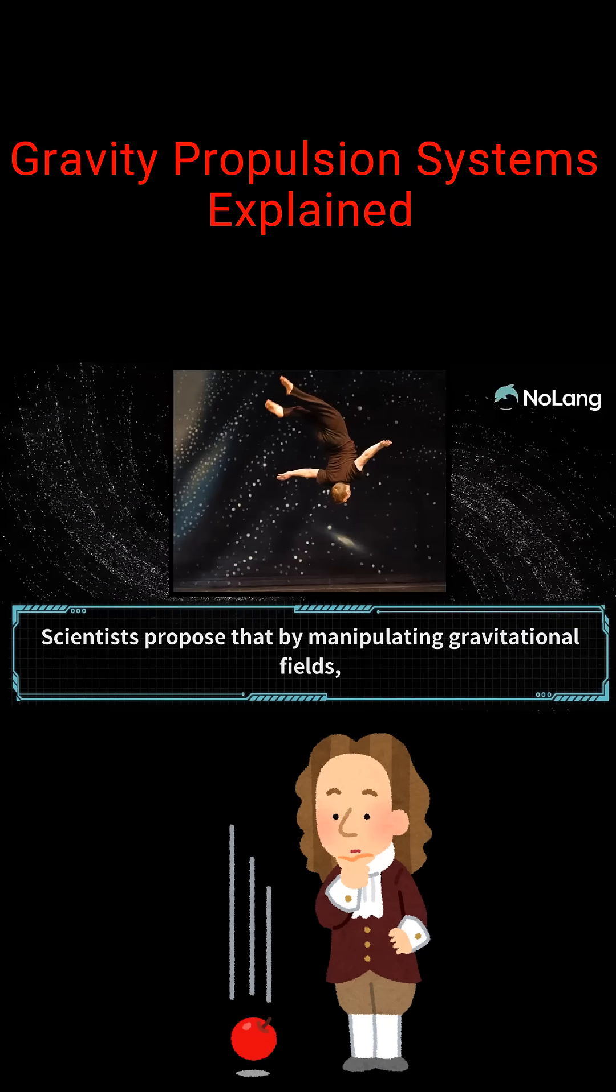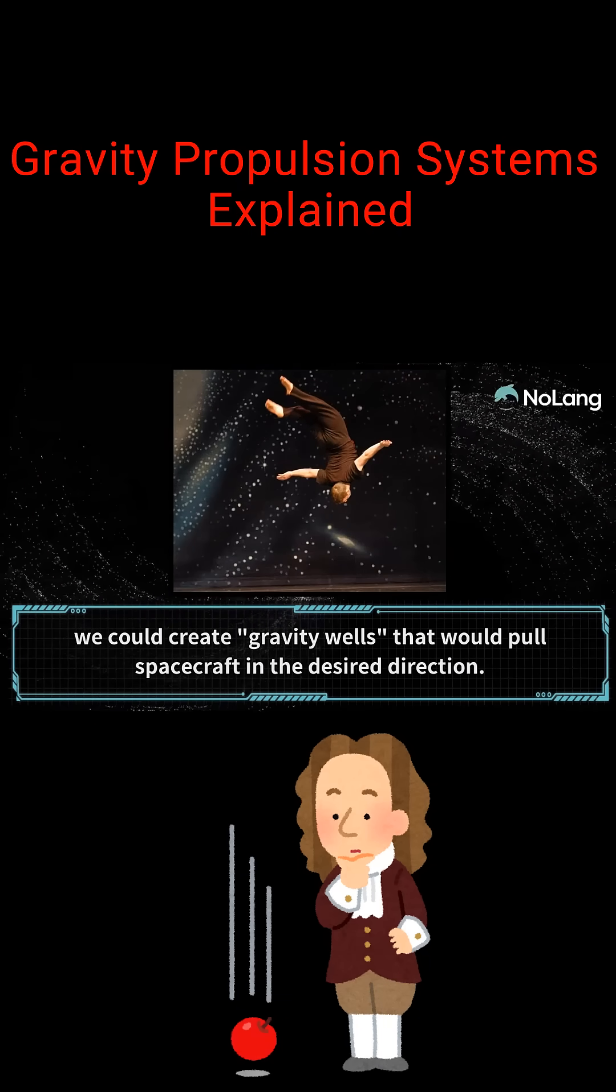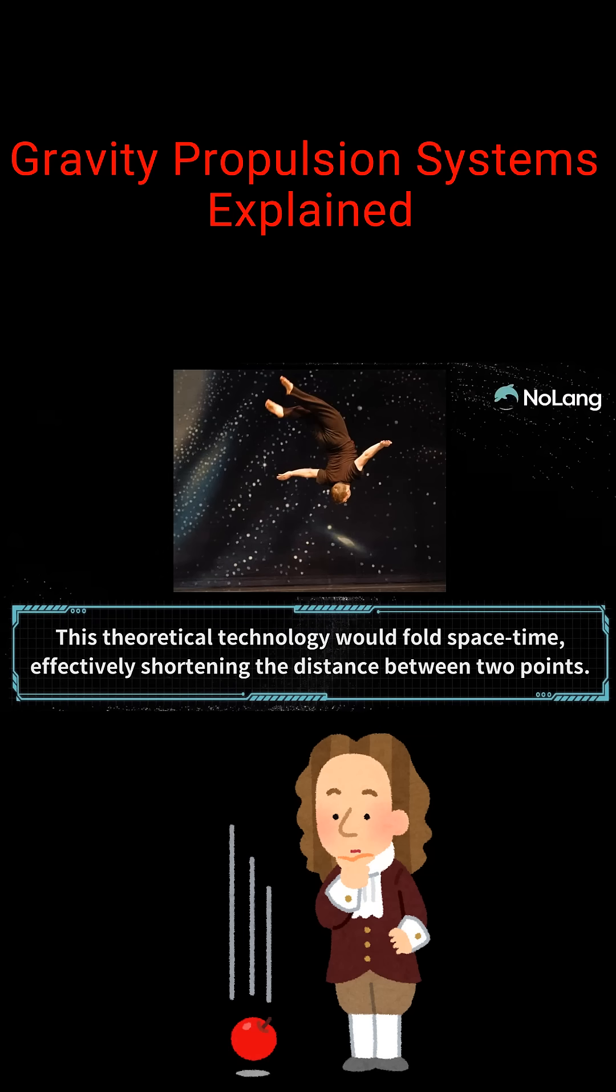Scientists proposed that by manipulating gravitational fields, we could create gravity wells that would pull spacecraft in the desired direction. This theoretical technology would fold spacetime, effectively shortening the distance between two points.